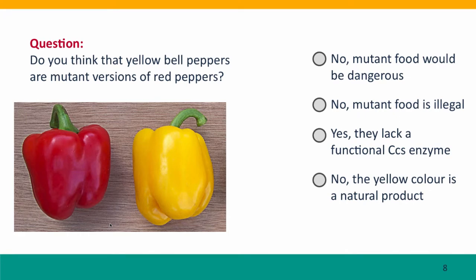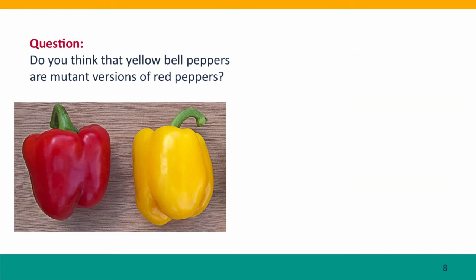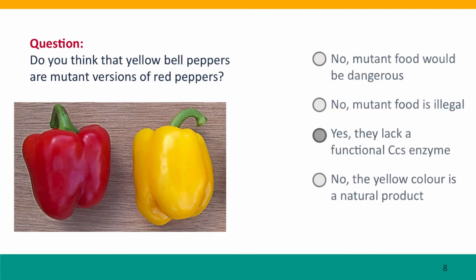So here's an easy question: do you think that yellow bell peppers are mutant versions of red peppers? One of the goals of this course is to help you realize that mutant food is not dangerous — it's no more dangerous than wild type food. In fact, almost all the food we eat has been selected for particular mutations that make it more attractive as food. Mutant food is certainly not illegal. And although the yellow color is a natural product, it's not the final product of the pathway — the final product is the red pigment.